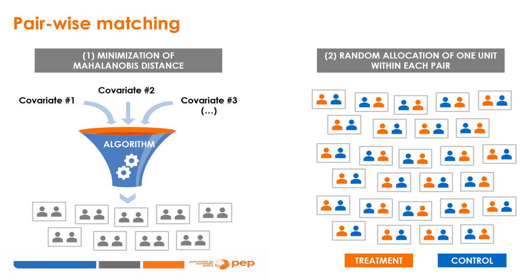In pairwise matching, pairs of units are formed to minimize the Mahalanobis distance between the values of all selected covariates within pairs. Only covariates closely correlated to the outcome of interest should be included. This minimization is carried out using an algorithm that produces pairs of units which are as similar as possible across all covariate dimensions simultaneously. Then, one unit in each pair is randomly assigned to treatment and the other to control.